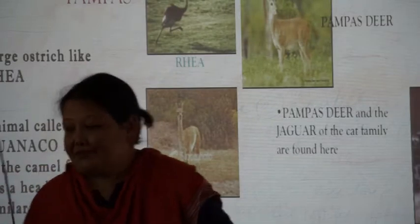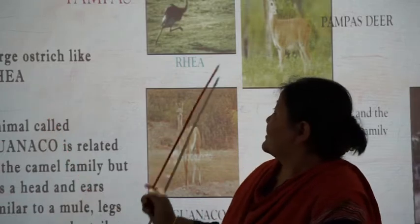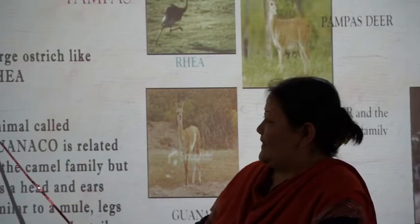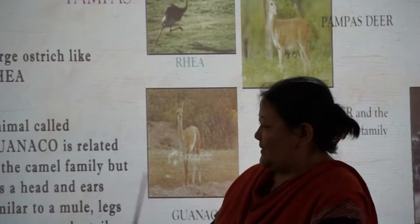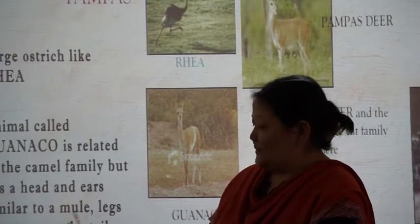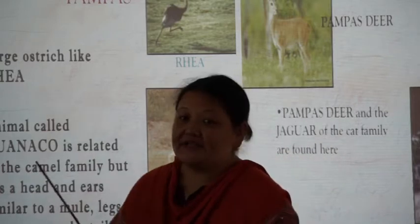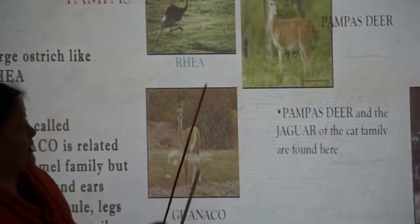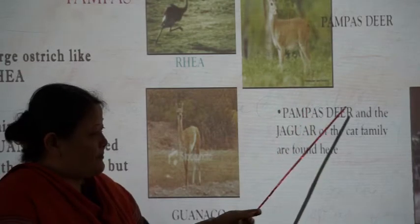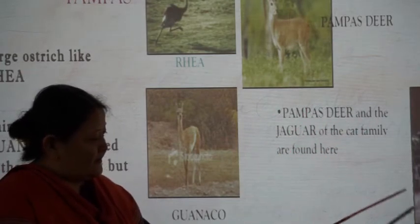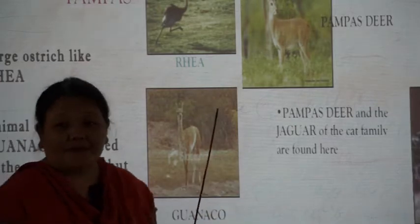In the pampas you find the large ostrich-like rhea, and the guanaco, which is related to the camel family but has a head and ears similar to a deer, with legs like a stag. Different types of animals are found in this region. You can also get the pampas deer, and the jaguar of the cat family is also found in the pampas region.